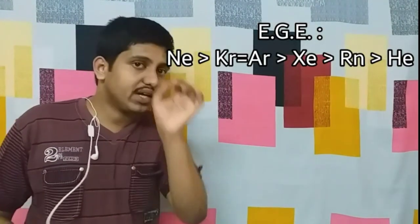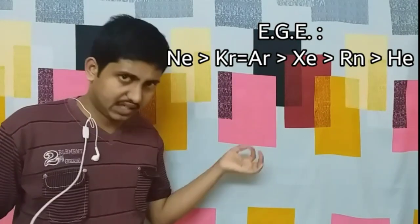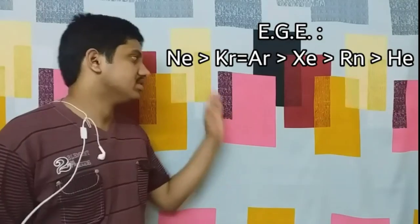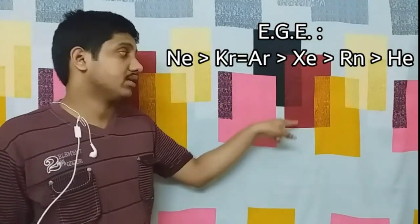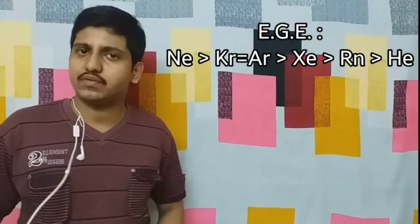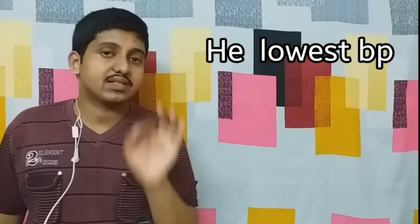Just like I told in my Group 16 and 17 elements, I will not discuss all the trends as I have discussed in Group 15 elements, d and f blocks, etc. I will just tell the anomalies, the important points. Here, the anomaly is seen in electron gain enthalpy. Electron gain enthalpy is highest for neon and least for helium. The order is: Ne > Kr = Ar > Xe > Rn > He. Another important physical property is helium has the lowest boiling point.